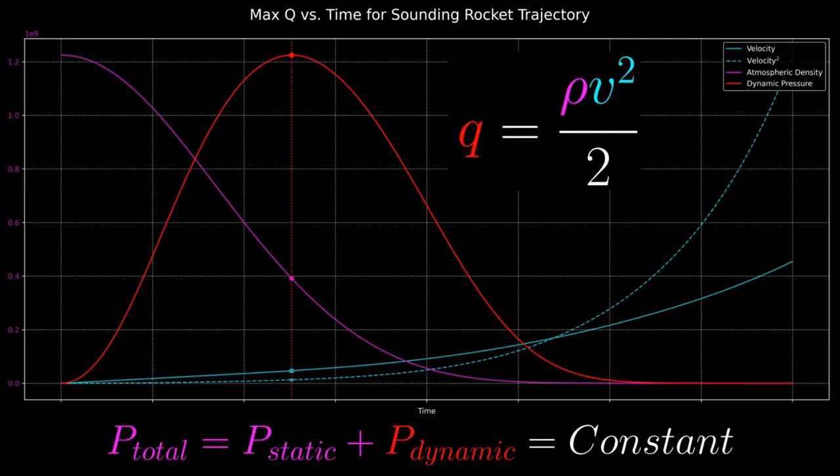Here are all the same values again for a sounding rocket trajectory, but here is shown as a function of time instead of altitude. Here these relationships look a bit different because the rocket is starting from zero velocity and its acceleration is itself increasing over time, as we saw from the last video.